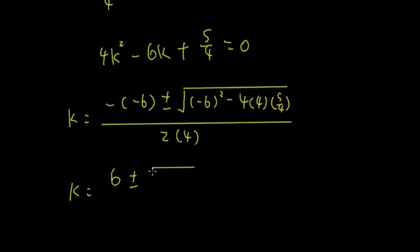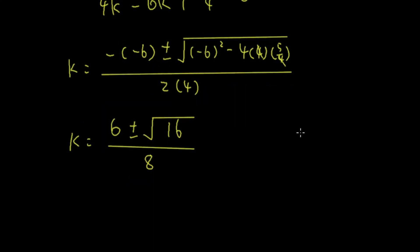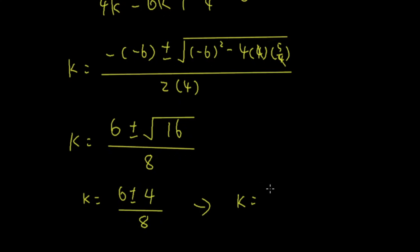Expanding the left side: 25/4 − 10k + 4k² = 5 − 4k. Rearranging: 4k² − 6k + 5/4 = 0. Using the quadratic formula: k = (6 ± √(36 − 4·4·(5/4))) / (2·4) = (6 ± √(36 − 20)) / 8 = (6 ± √16) / 8 = (6 ± 4) / 8. So k = 10/8 = 5/4, or k = 2/8 = 1/4.